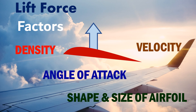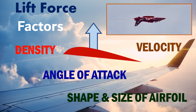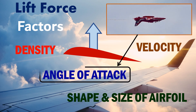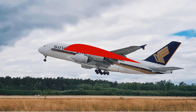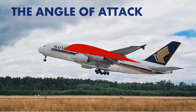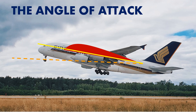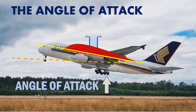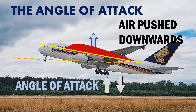To understand how an aircraft can fly upside down, we need to take a closer look at what influences the angle of attack. The angle of attack is the angle between the chord line and the relative air flow. As the angle of attack increases, the lift increases. And as the angle of attack decreases, the lift decreases. This is because an increase in the angle of attack means more air will be pushed downward, and hence more lift is created.